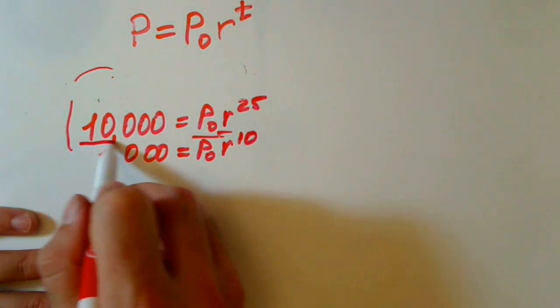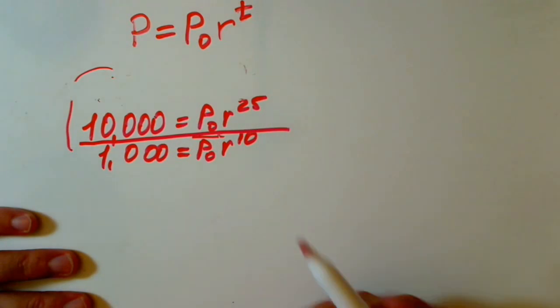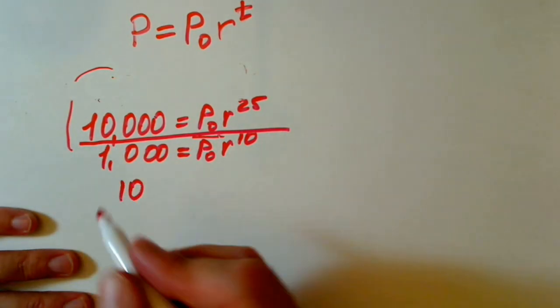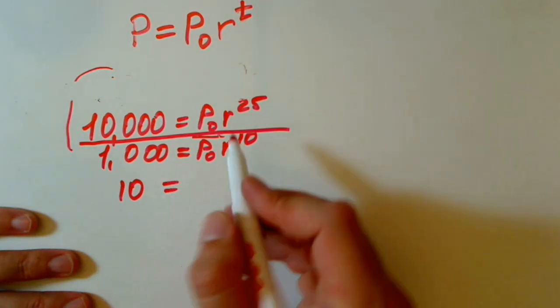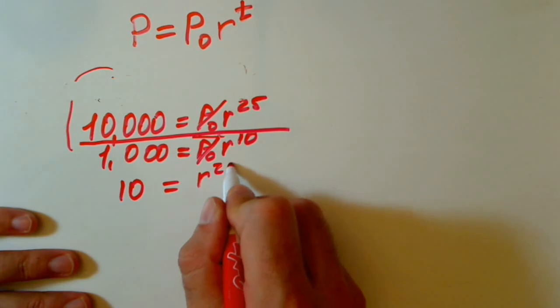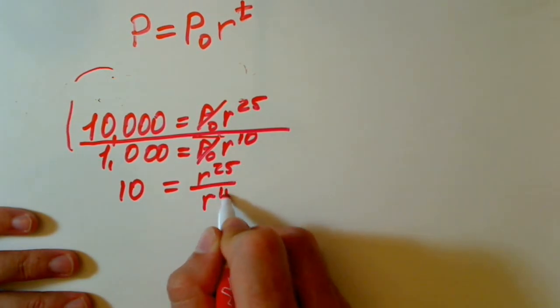And if we divide these two equations, what do we have? We have 10,000 divided by 1000, just 10. P₀ actually cancels and we have r to the 25th power over r to the 10th power.